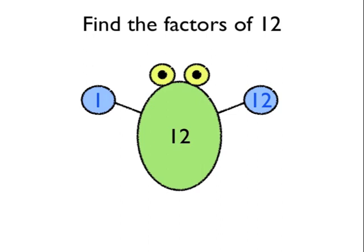Are there any other two numbers we can times together to make 12? Yup, what about 2 and 6? So again, 2 and 6 become feet for the factor bug.